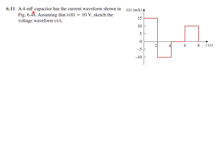A 4 mF capacitor has the current waveform shown in the figure — this is the current waveform given. Assume that V(0), the initial voltage, is 10 volts. We need to sketch the voltage waveform V(t).